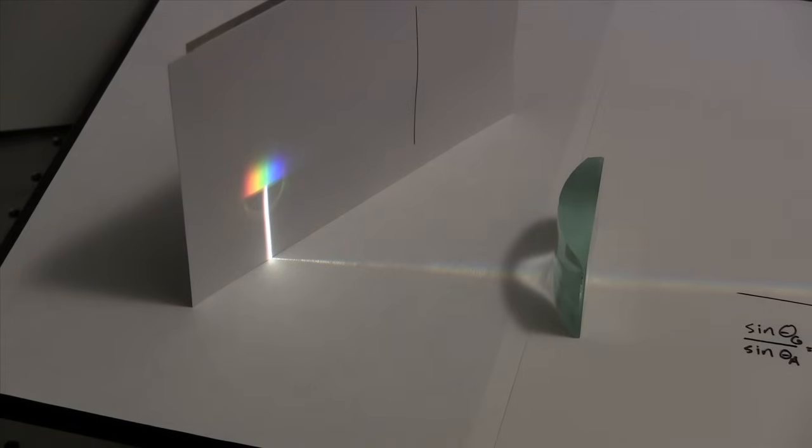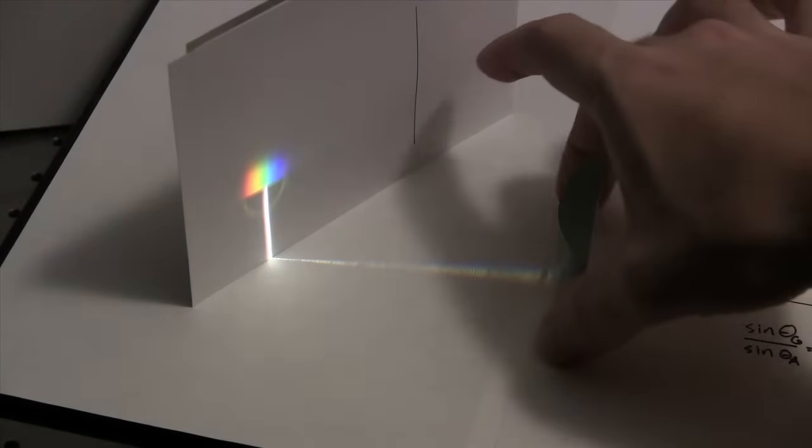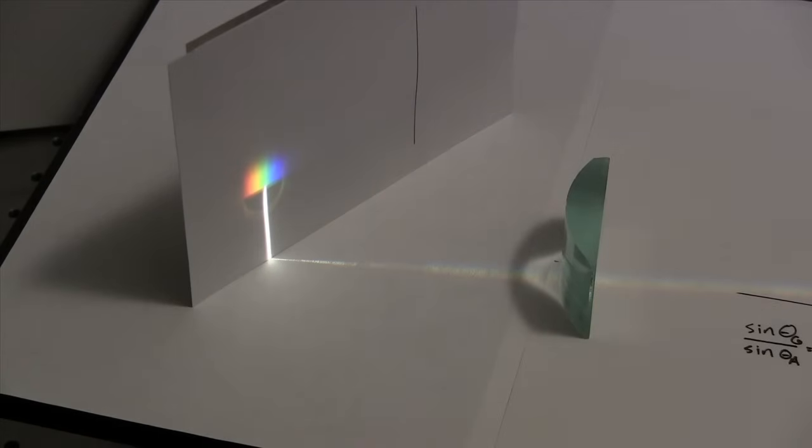Now it turns out that you don't actually need all of these colors to trick your eyes into seeing white. If you're watching this on a TV screen or a computer screen at home, what you're seeing as white is actually a combination of red, blue, and green. But for our purposes, we're seeing the sum of all of the colors in the input spectrum.